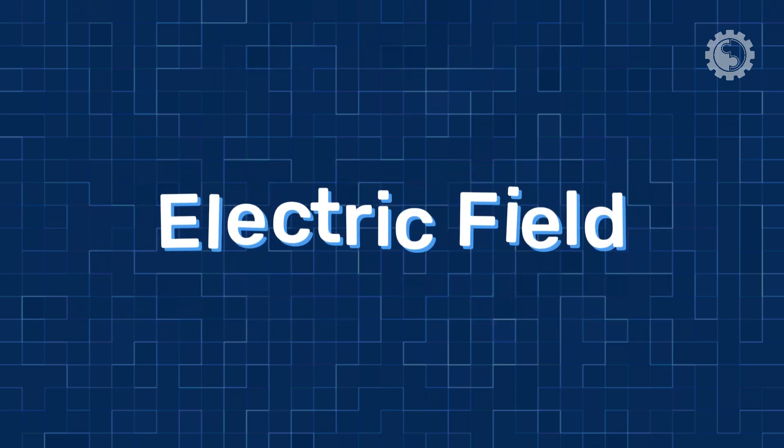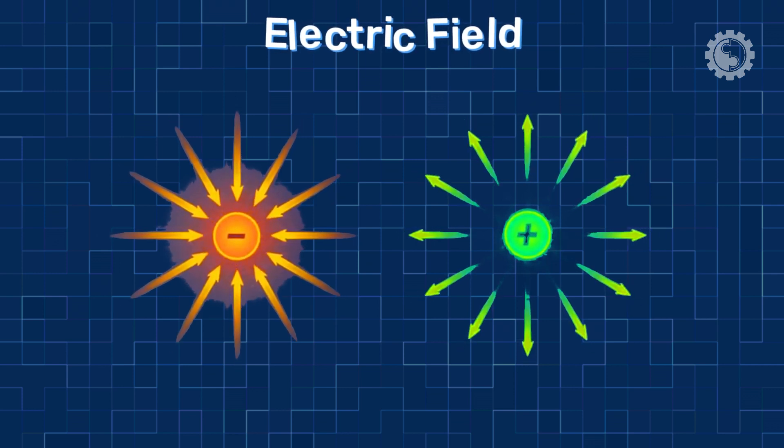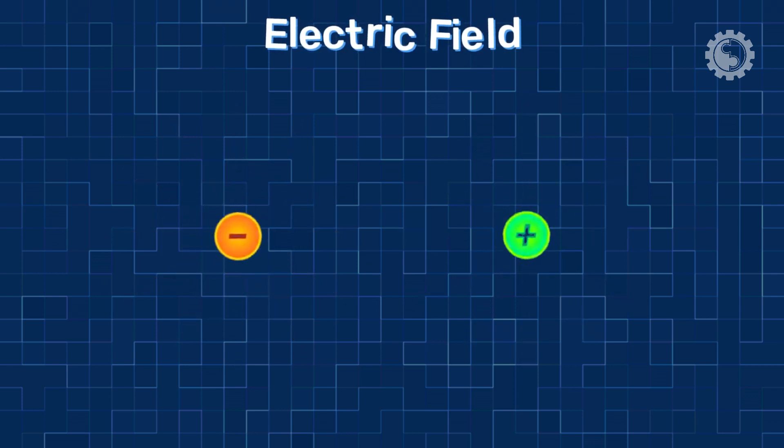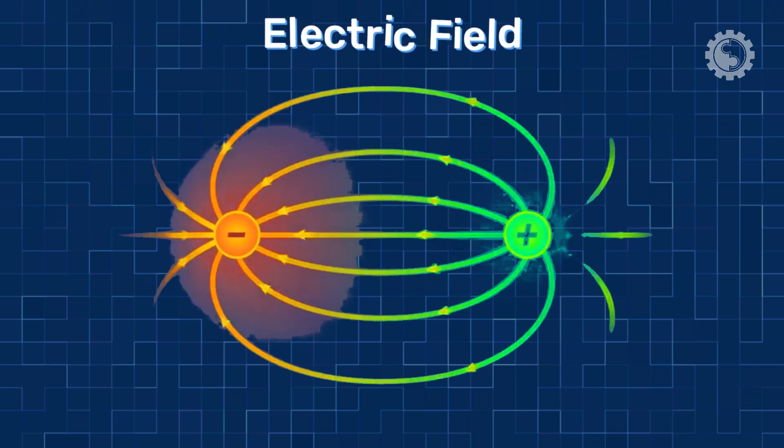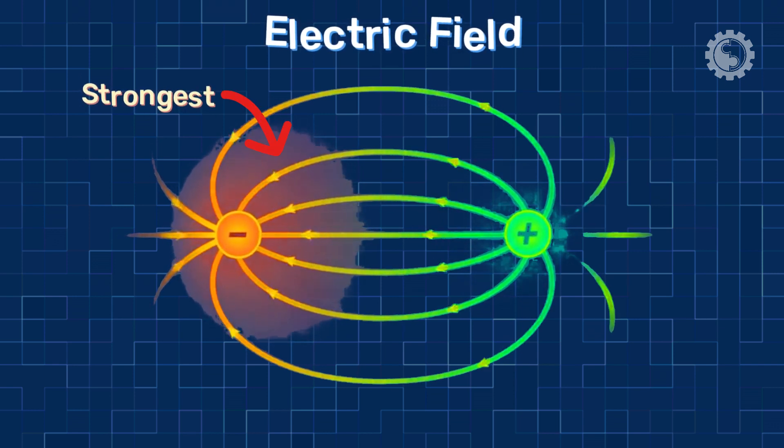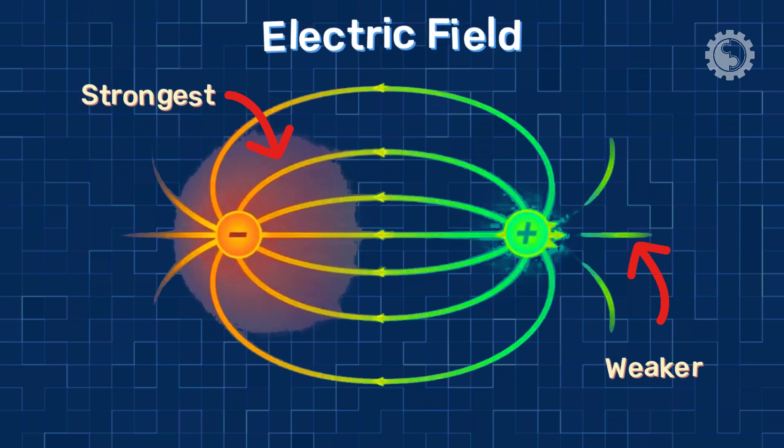Electric charge can exert a force on other charged particles even at a distance. This force is called the electric field. The electric field is strongest near the charged particle and gets weaker with distance.